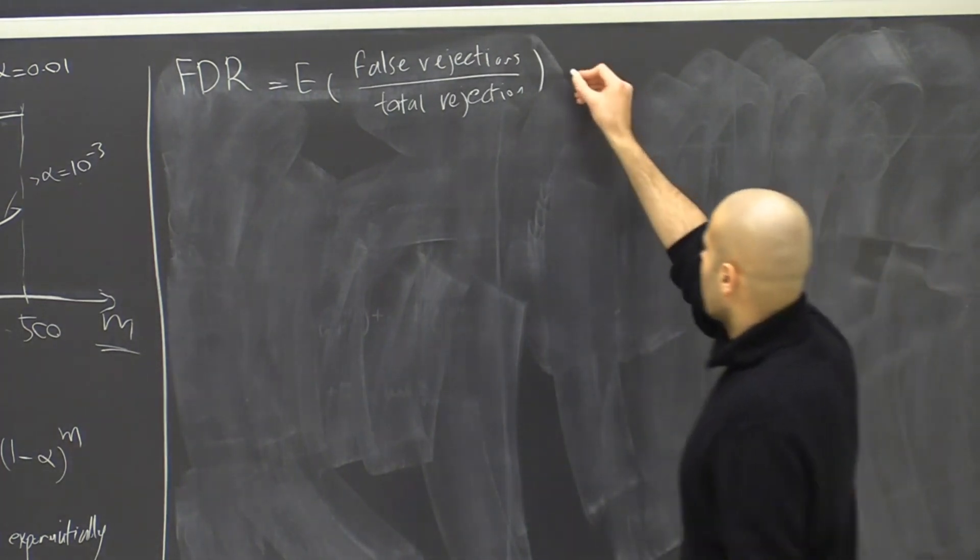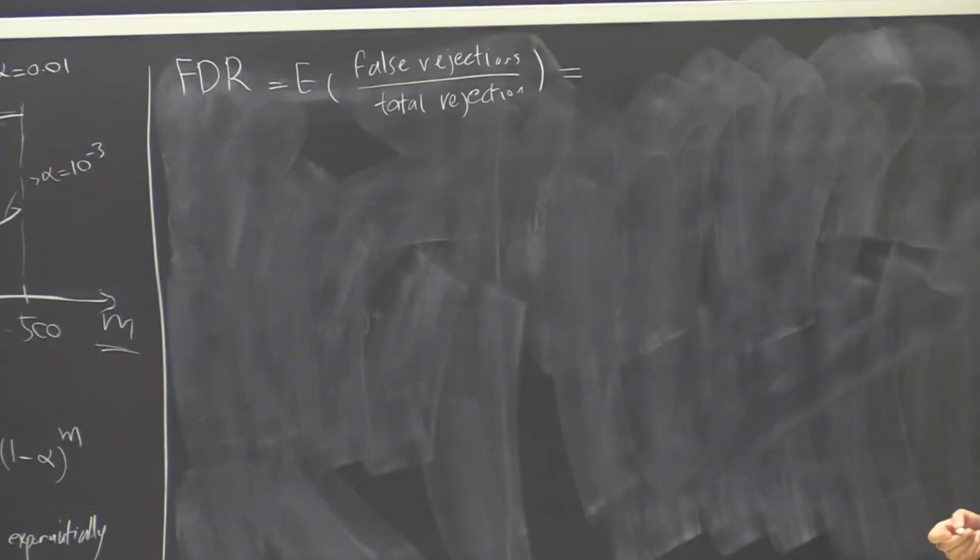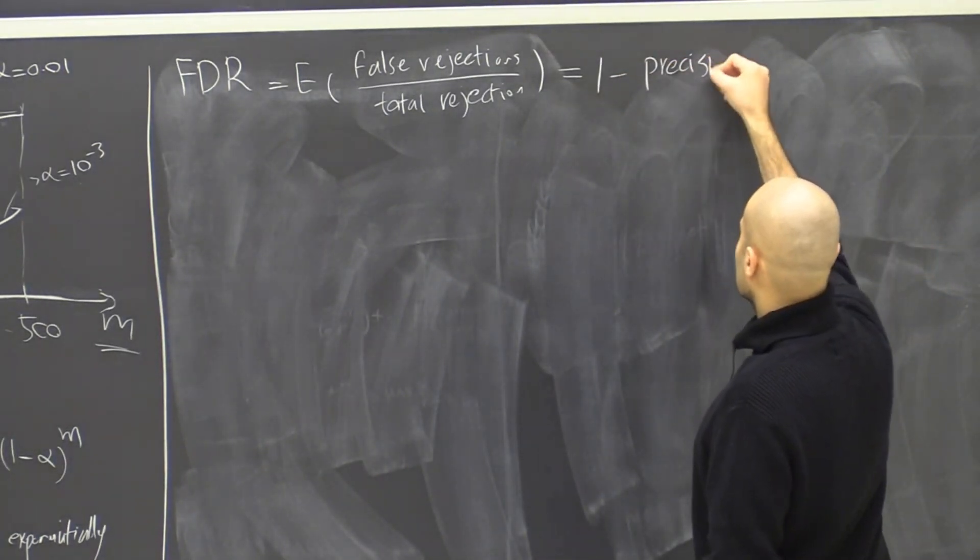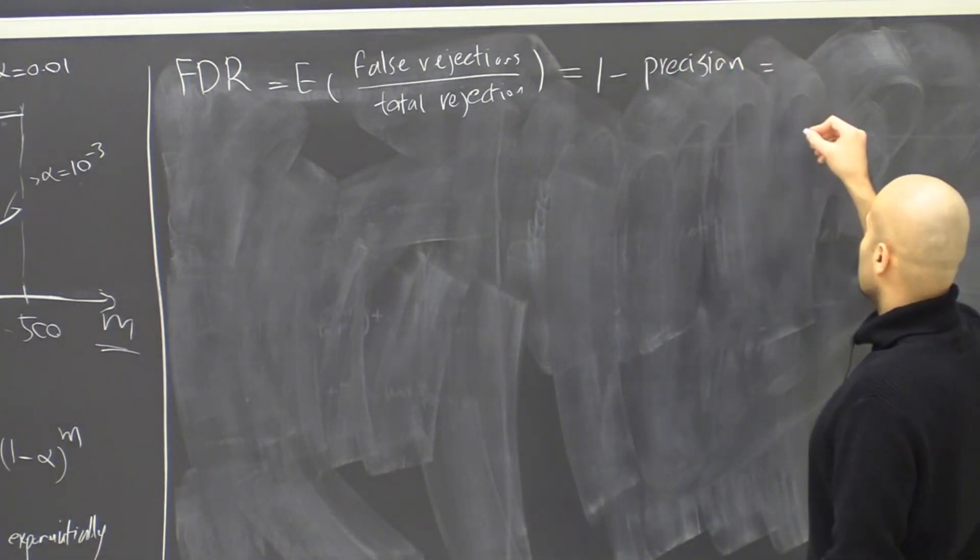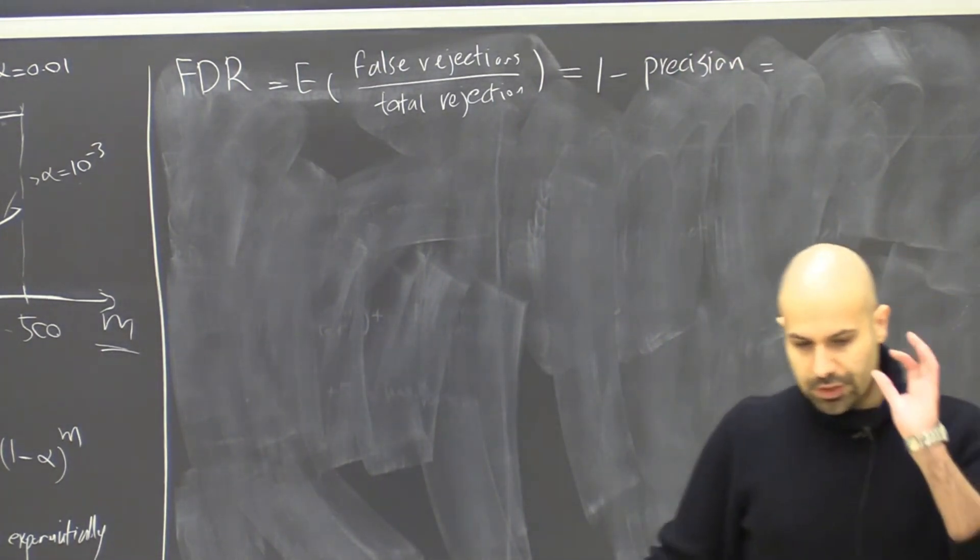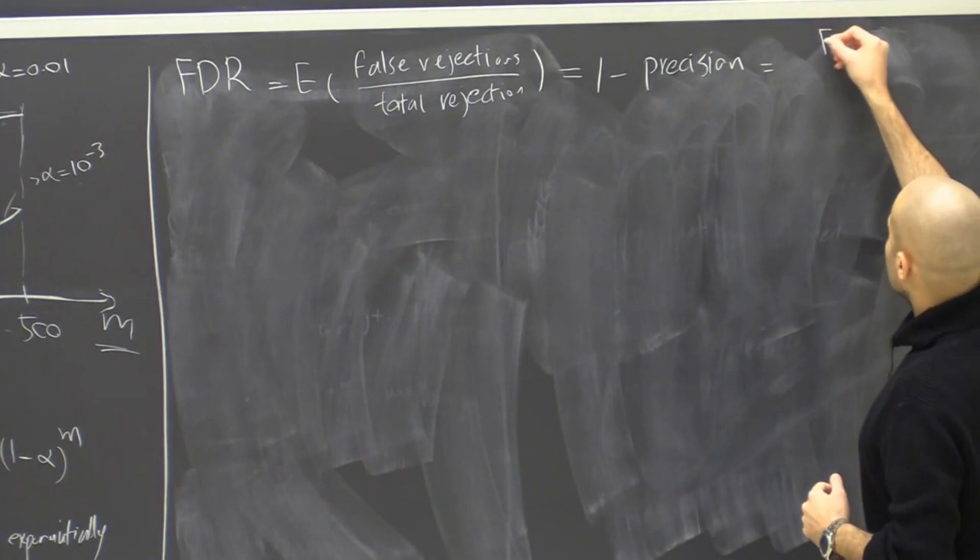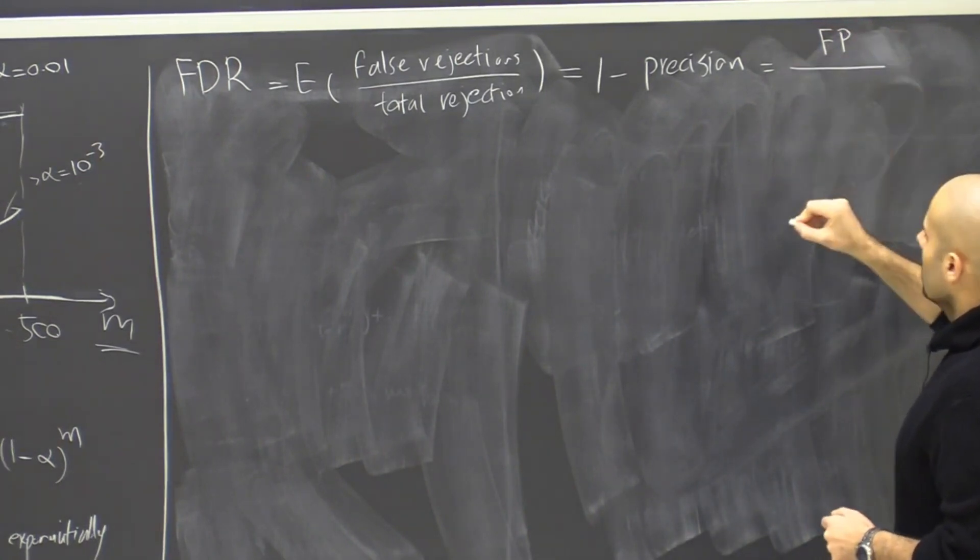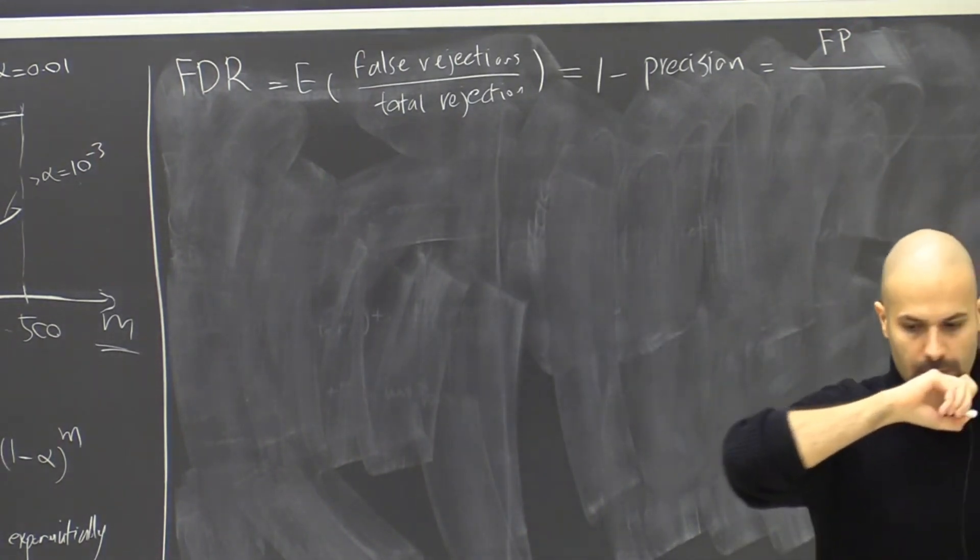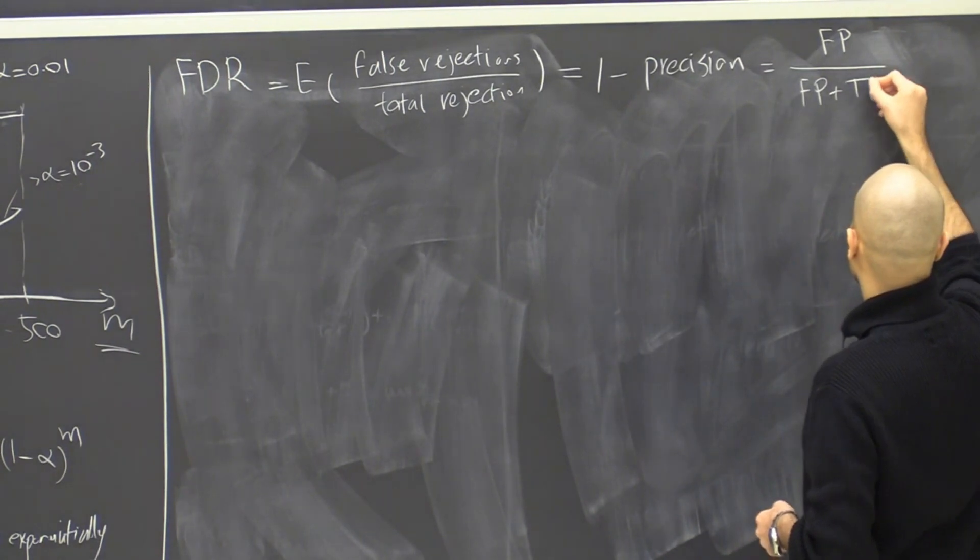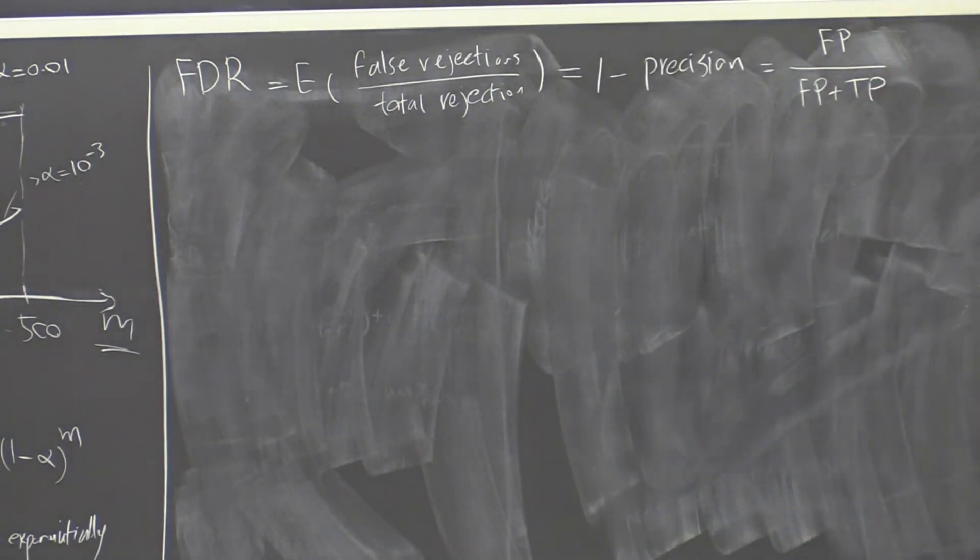But in terms of the terminology that we are more familiar with, this is actually one minus precision. When we reject something, it is as if we're classifying it as positive, as discovery. So it is false positive divided by total rejections, which would be false positive and true positive. You can now see why this is one minus precision, because precision is true positive over the same denominator.